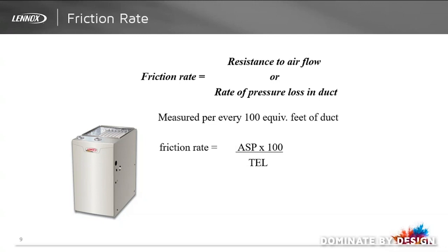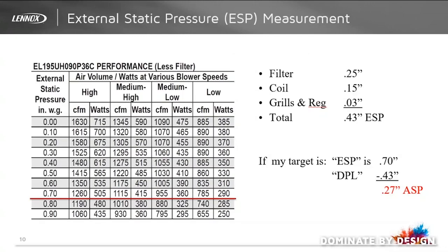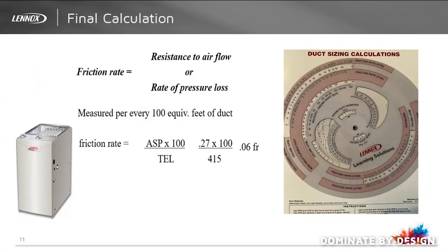Since we have already calculated the total equivalent length, we now need to figure out what the available static will be for the formula. In order to determine available static, we must first determine our target by looking up what speed we need to use and at what external pressure for our given furnace. These performance numbers can be found in the installation or service manuals, also available on LenoxPros in the document library. Once we have our target, we determine the external static pressure drop of devices installed on the system — such as filters, coils, and grills and registers — and subtract that pressure drop from the target to get our available static pressure, or ASP. Putting this into the formula along with the total equivalent length, it comes to a 0.06 friction rate.